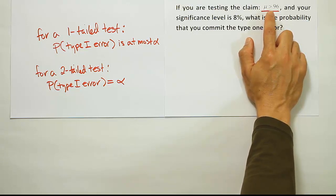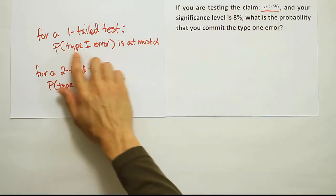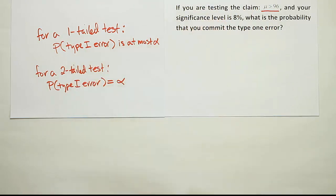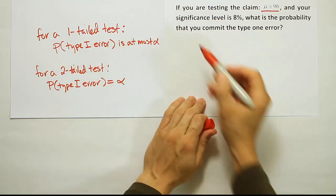And this tells us that the hypothesis test will be right-tailed because that's a greater than symbol that they're using in HA. And if it's a right-tailed test, then the probability of a type 1 error is at most alpha. And they tell us that alpha here is 8%.